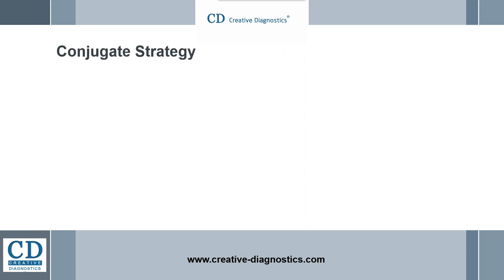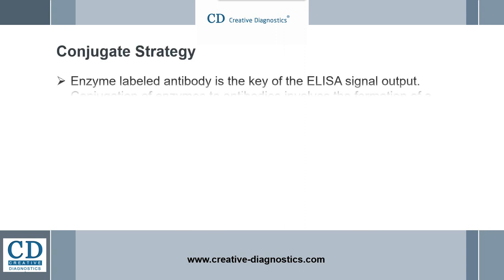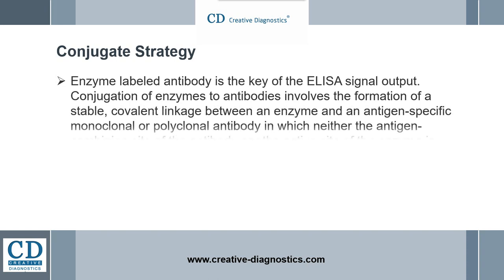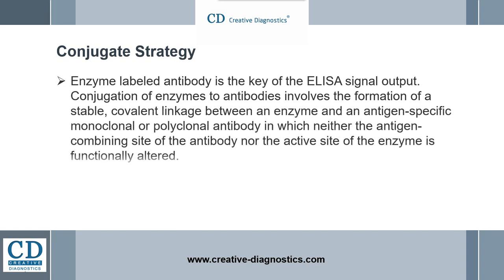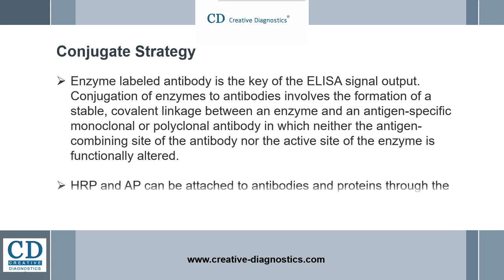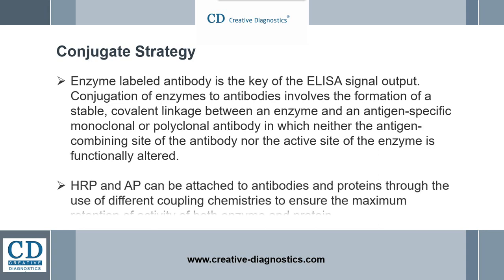Enzyme labeled antibody is the key of the ELISA signal output. Conjugation of enzymes to antibodies involves the formation of a stable covalent linkage between an enzyme and an antigen-specific monoclonal or polyclonal antibody, in which neither the antigen combining site of the antibody nor the active site of the enzyme is functionally altered. Various reporter enzymes, such as horseradish peroxidase, alkaline phosphatase, and many others, can be attached to antibodies and proteins through different coupling chemistries to ensure maximum retention of activity of both enzyme and protein.